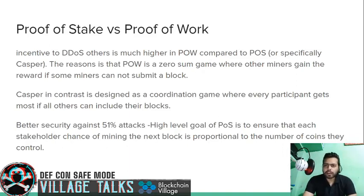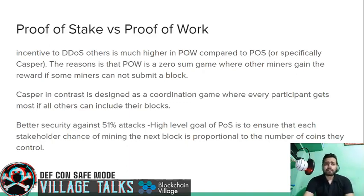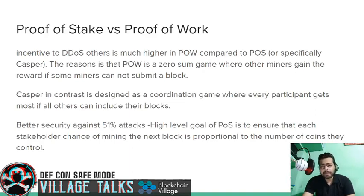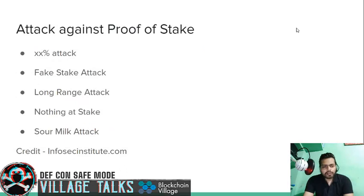There is a Casper protocol based on proof-of-stake that provides its own security implications, including a slashing mechanism. If a validator validates a block honestly, they are rewarded. If found to be involved in malicious activity, their stake is slashed as a penalty and they may lose their privileges to participate in network consensus.